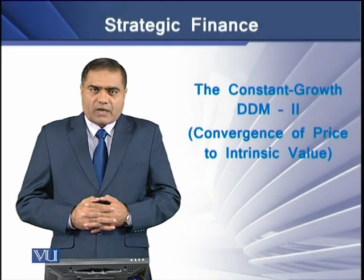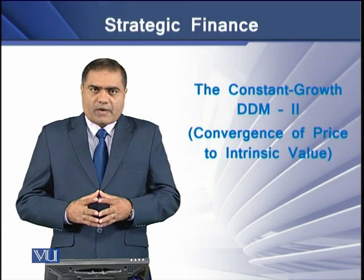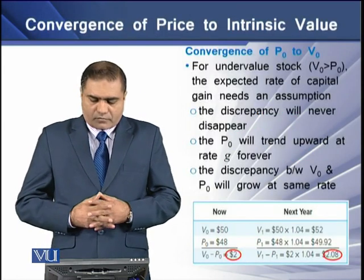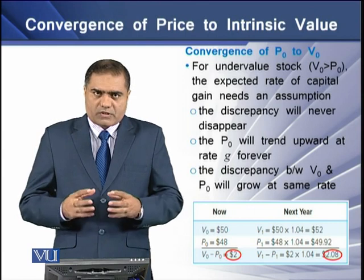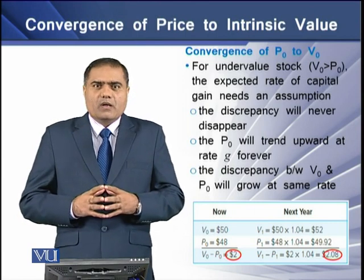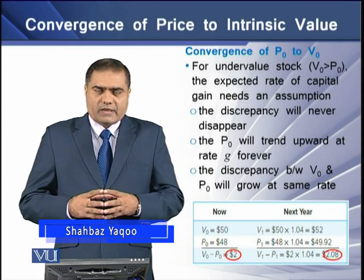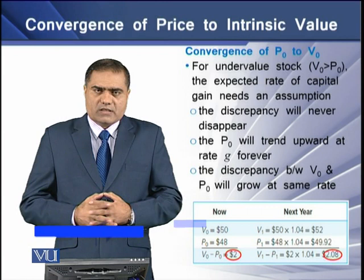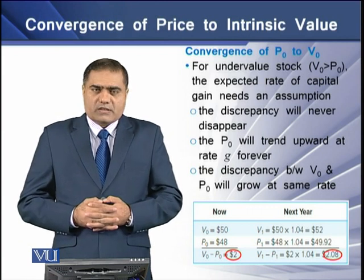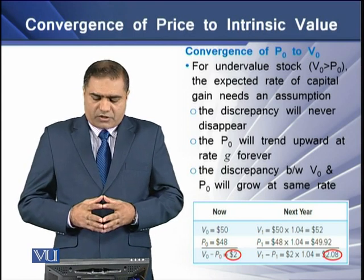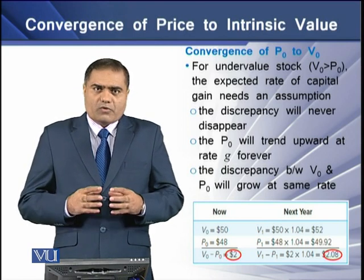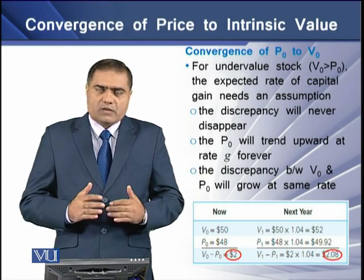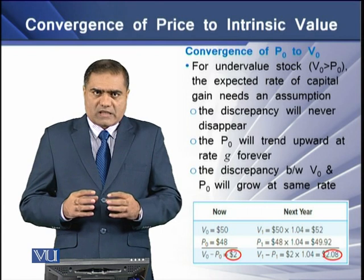To understand how a stock's market price approaches its intrinsic value, we have an example to consider. For an undervalued stock, the intrinsic value is greater than its current price or p0, meaning there is some discrepancy. For such a stock, the expected rate of capital gain needs certain assumptions: this discrepancy will never disappear, p0 will turn upward at the rate of g forever, and the discrepancy between v0 and p0 will grow at the same rate.